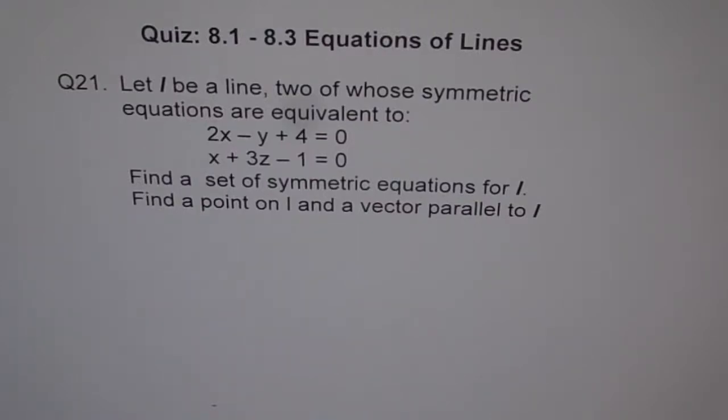Question 21. Let L be a line, two of whose symmetric equations are equivalent to 2x minus y plus 4 equals 0, and x plus 3z minus 1 equals 0. Find a set of symmetric equations for line L. Find a point on line and a vector parallel to line L.